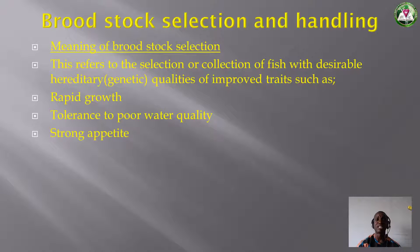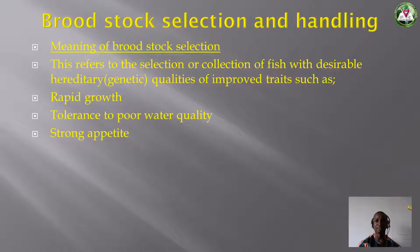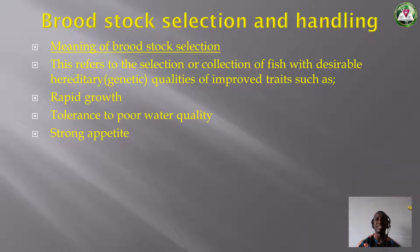Another trait to look for is appetite. Select fishes that have a strong appetite for food — they keep eating. The more they eat, the more they grow, and the more weight they acquire. If your fish have more weight, you have more money. Select fishes that have a good flair for eating.